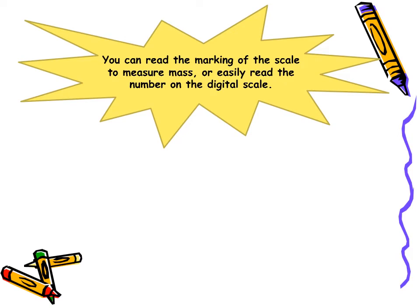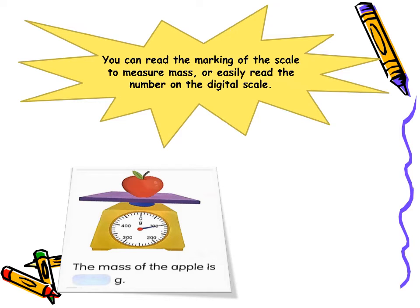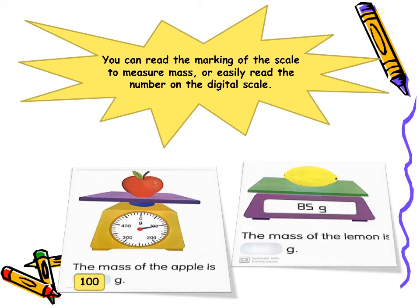You can read the marking of the scale to measure mass. On the scale here, we measure the mass of the apple. If you look at the marking, you will find that it points to number 100, which means the mass of the apple is 100 grams. Or, if you are going to measure using a digital scale, as in the second picture, we measure the mass of a lemon. The mass of the lemon is 85 grams.